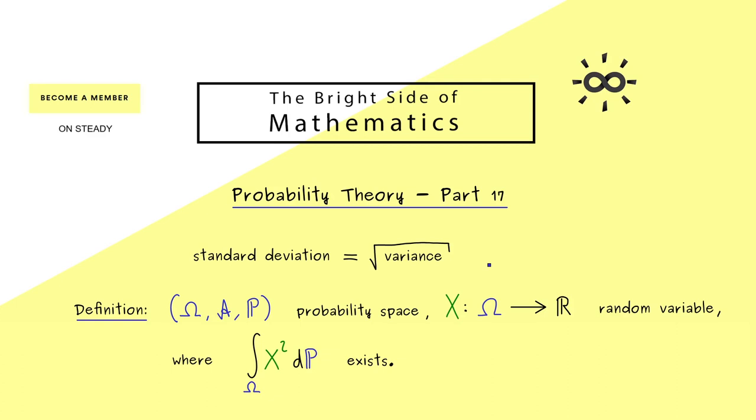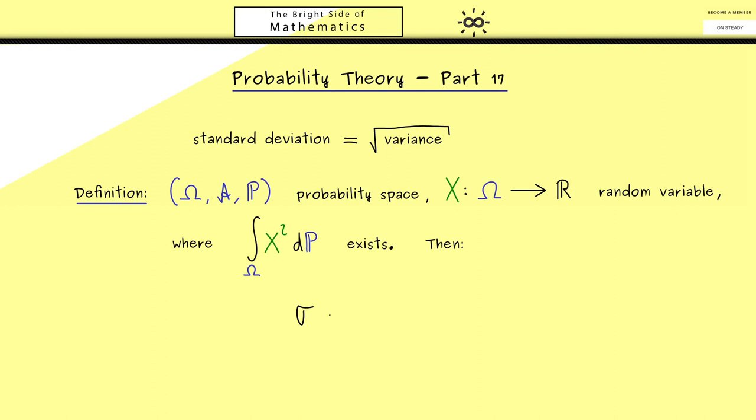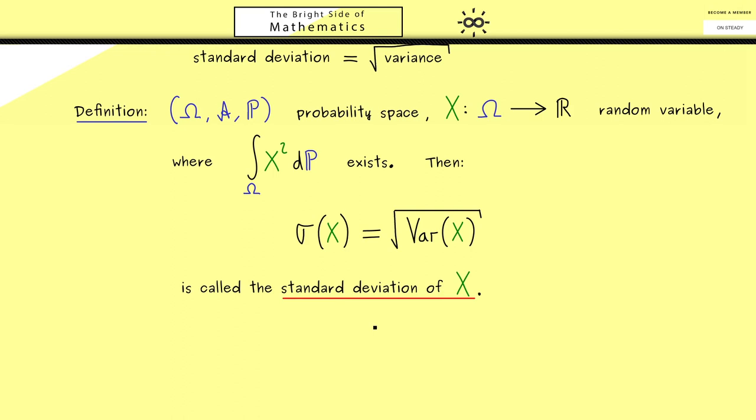If this is a finite number, we can define the following: a number written as lowercase sigma, usually written as sigma of X. This is defined as the square root of the well-defined variance of X. This positive real number is called the standard deviation of the random variable X. Since we already learned how to calculate the variance, we can also calculate the standard deviation immediately. What you use is the expectation of X squared, then subtract the expectation of X squared, and the only additional thing we have to do is take the square root of the result.